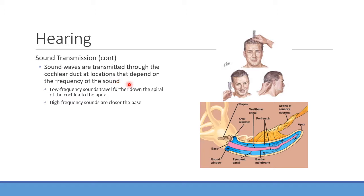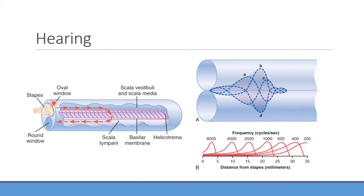Low-frequency sounds travel farther toward the apex of the cochlea; higher-frequency sounds remain closer to the base near the stapes. The stapes connects to the oval window, displacing perilymph in the scala media, which vibrates the hair cells and generates action potentials. The sound then moves down into the scala tympani and out the round window. Frequency versus distance from the stapes: higher cycles per second means shorter travel distance within the cochlea.